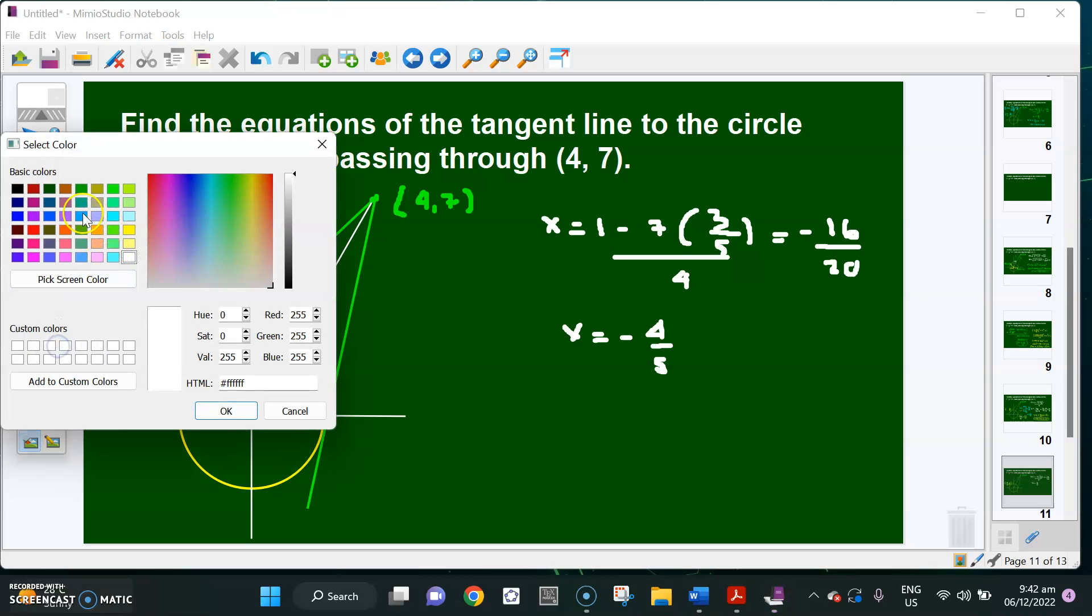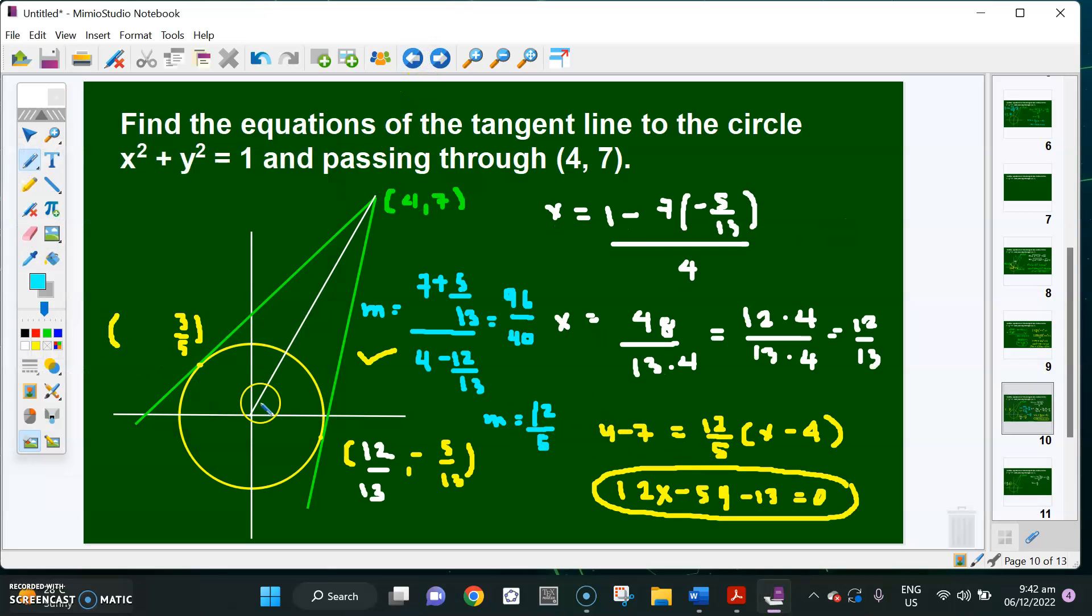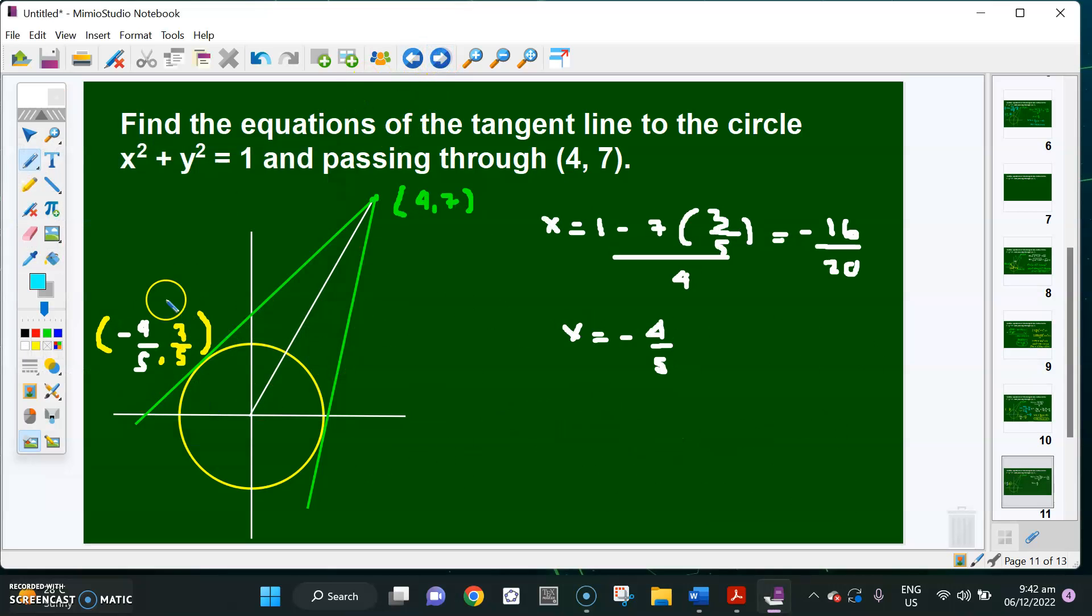I have the abscissa. You can get the slope. So the slope will become (7 minus 3/5) over (4 minus negative 4/5). So 4 plus 4/5. Eventually, the 1/5 cancels. I'm going to have (35 minus 3), that's 32 over 5, and this is 24 over 5. So the 1/5 cancels, so 32 over 24. Divisible by 8. So the slope here is 4/3.